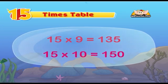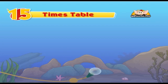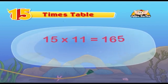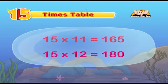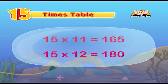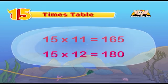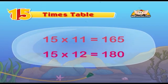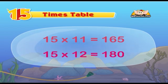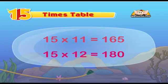We're reaching the ending. 15 11s are 165, 15 12s are 180. Isn't this so easy for a big number like 15, for which the table we are learning so we can do it freely.